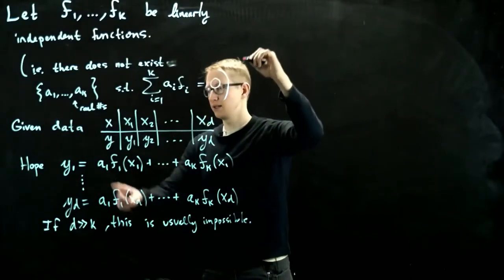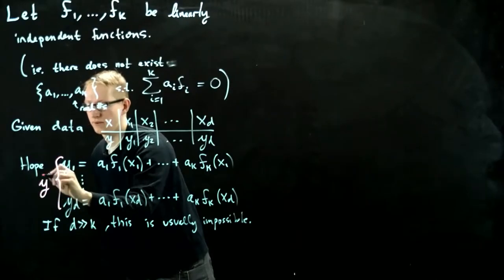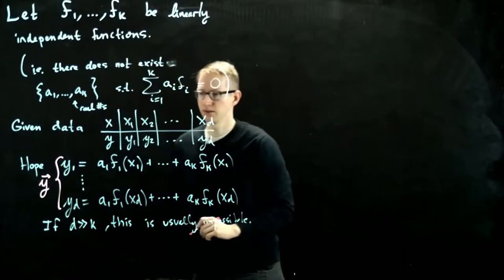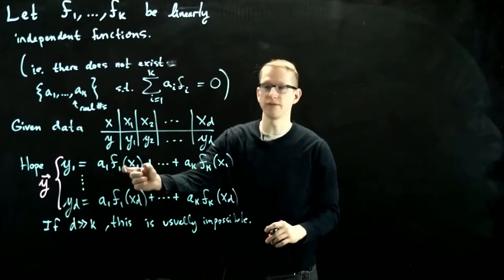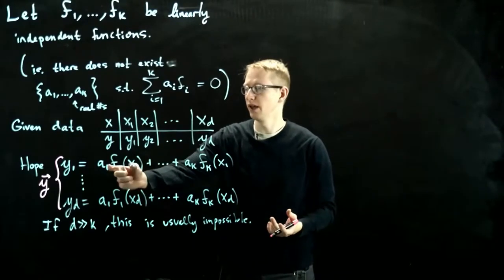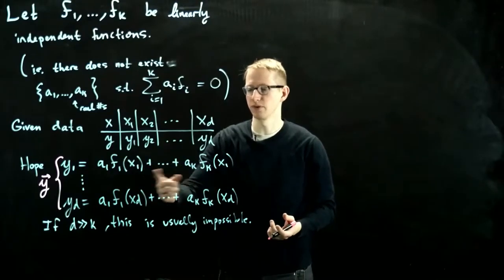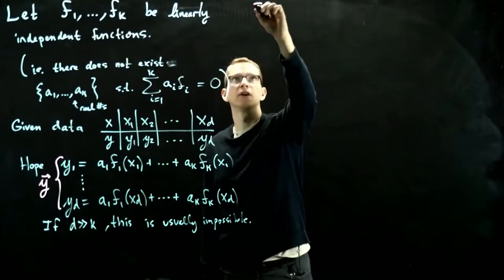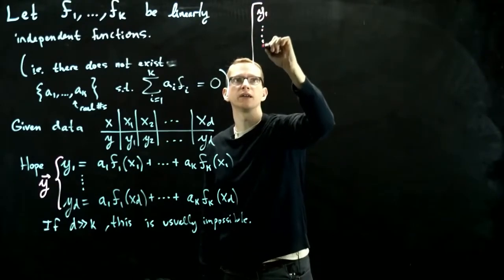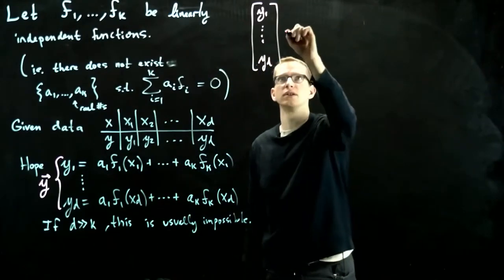Set y to be this vector here. So let's call this the vector y. What you notice here is that each of these numbers, so f1(x1) is a specific number, we're taking a linear combination of these numbers with coefficients coming from the a's.